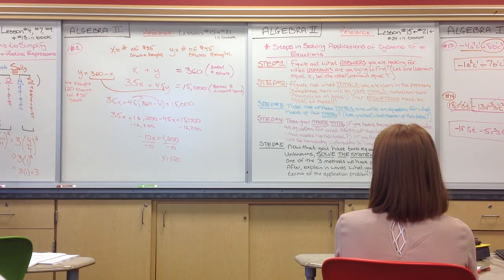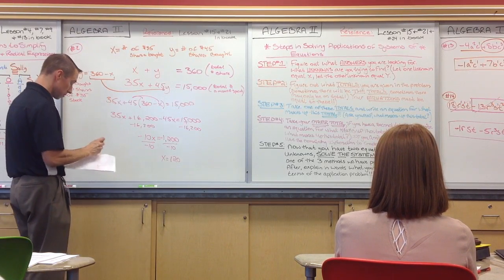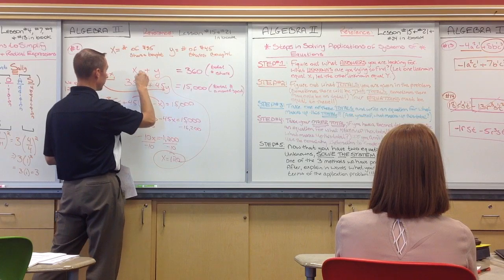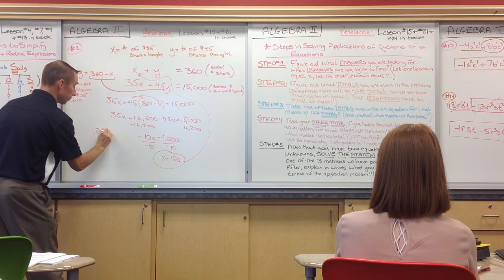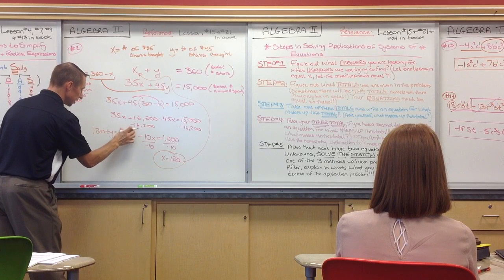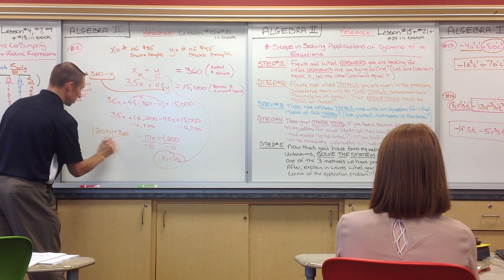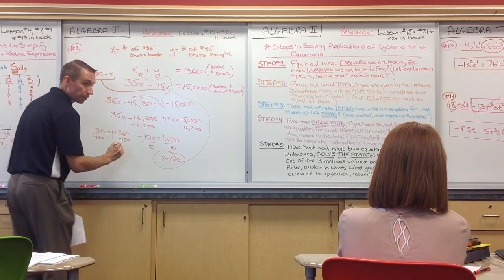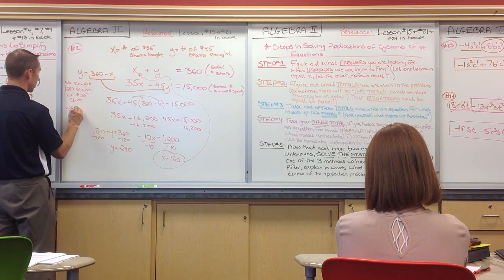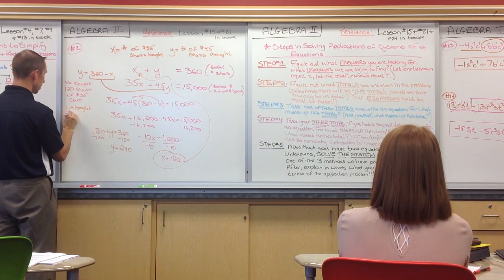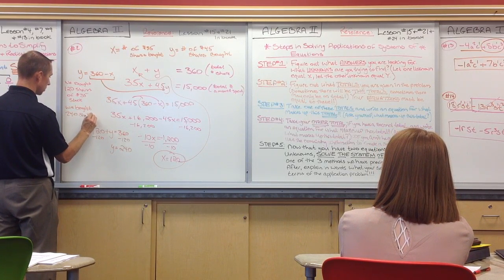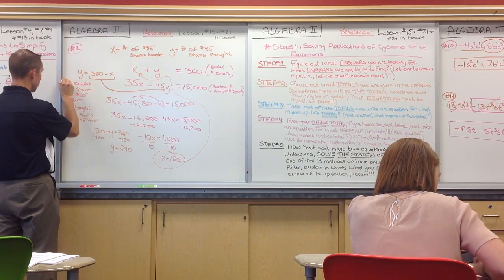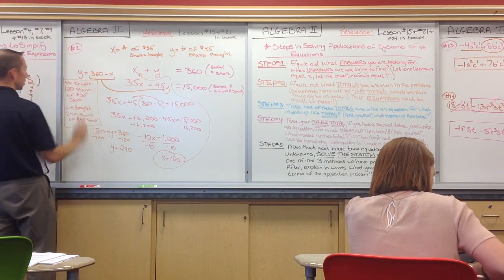All right, now, how do we figure out the Y? Take this and put 120 in place of X. So, we have 120 plus Y is equal to 360. And we simply just subtract 120, and we get Y is equal to 240. So, that also means we purchased 240 shares of $45 stock. So, that is your answer to number two.